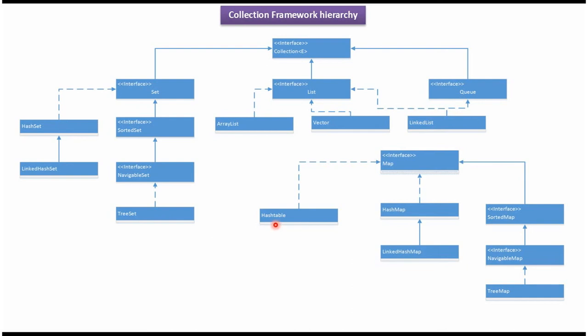HashtableClass implements MapInterface. HashMapClass implements MapInterface. LinkedHashMapClass extends HashMapClass. SortedMapInterface extends MapInterface. NavigableMapInterface extends SortedMapInterface. TreeMapClass implements NavigableMapInterface. This is about the Collection Framework Hierarchy — thanks for watching.